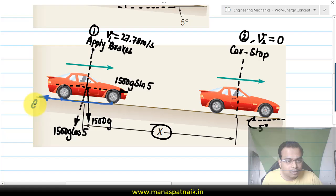So these are essentially the forces: 8000 newtons and 1500g sin 5 are the two forces acting along the plane. What we wish to do is calculate the work done by these forces starting from point one until we reach point two where the car eventually stops. That work done will be equal to the change in kinetic energy. The kinetic energy at point two will be obviously zero (half mv squared, velocity is zero), and the kinetic energy at one is going to be something we'll work out.